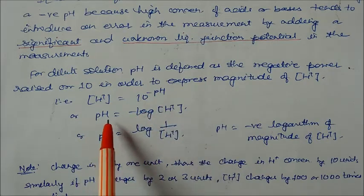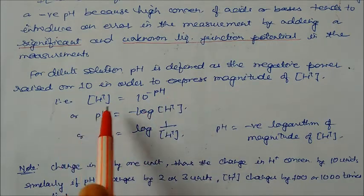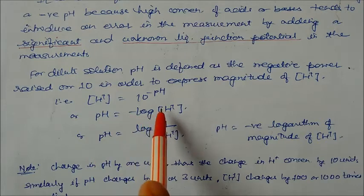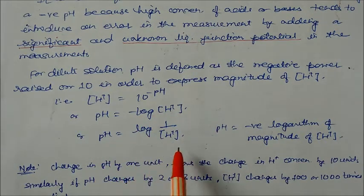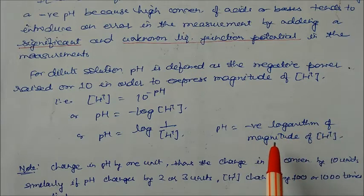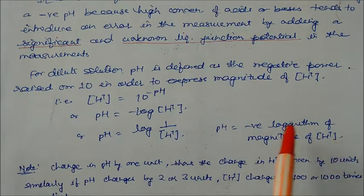If you multiply by log, on multiplying log you will get pH = -log[H+] or pH = log(1/[H+]). So this becomes the negative logarithm of magnitude of H+ concentration.